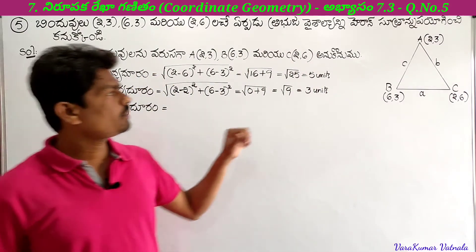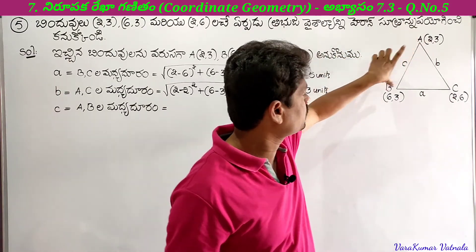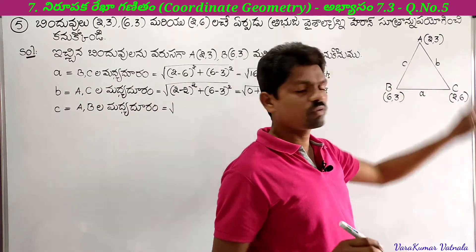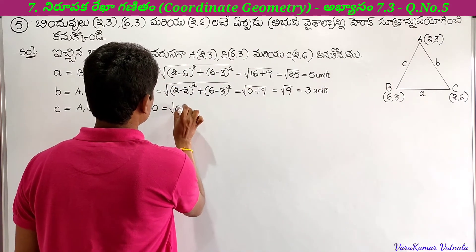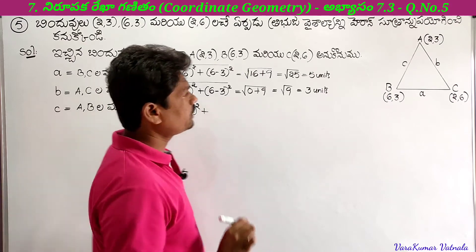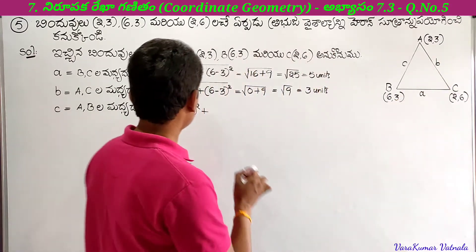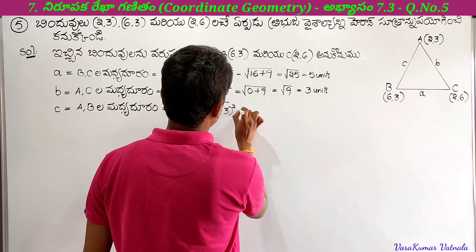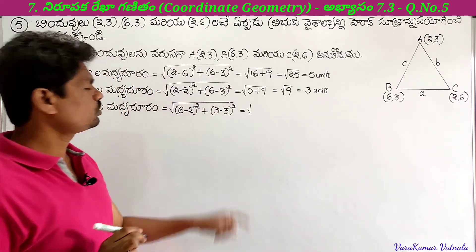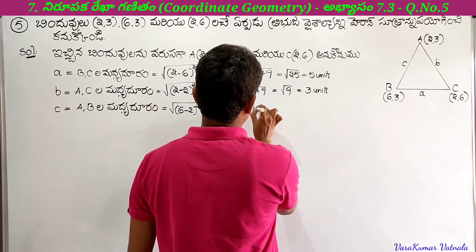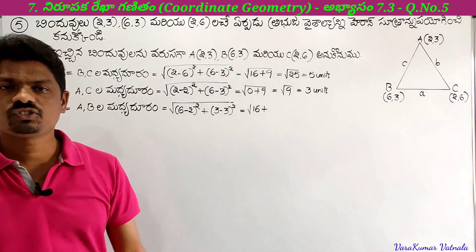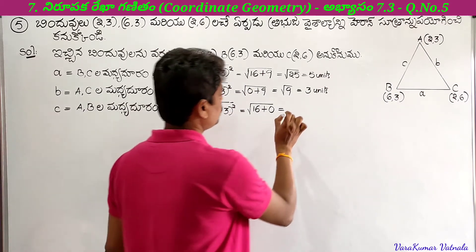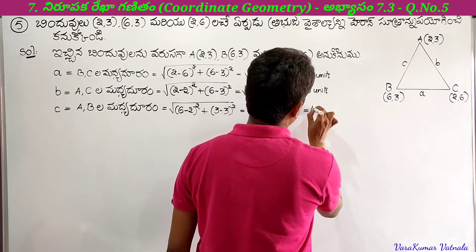Next, c is the distance AB, where A is (2,3) and B is (6,3). So square root of (6 minus 2) whole square plus (3 minus 3) whole square. Simplifying: 6 minus 2 equals 4, 4 square equals 16. Plus 3 minus 3 equals 0, 0 square equals 0. Square root of 16 plus 0 equals square root of 16, which equals 4 units.